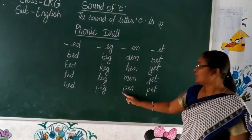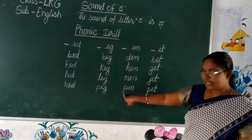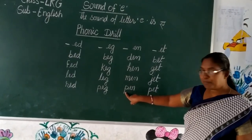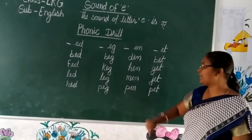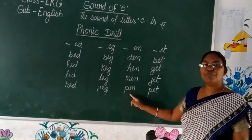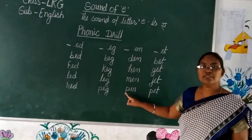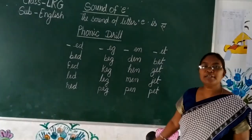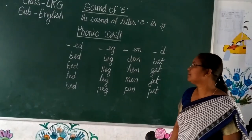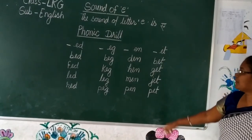Next we added letter P before EN. The phonics sound is 'p' and 'pen'.